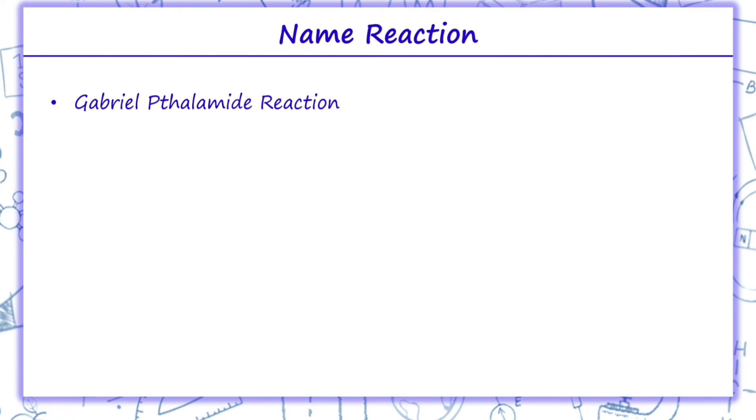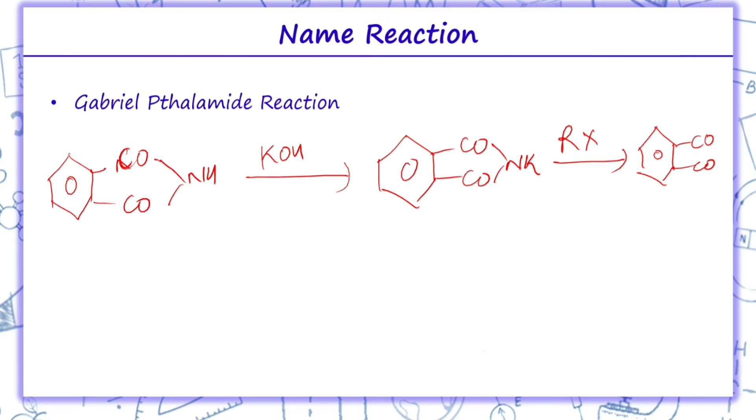Next, Gabriel phthalimide reaction. In Gabriel phthalimide reaction, first of all we have phthalimide over here which is treated with KOH. We get potassium salt of phthalimide, which on reaction with alkyl halide gives alkyl phthalimide.